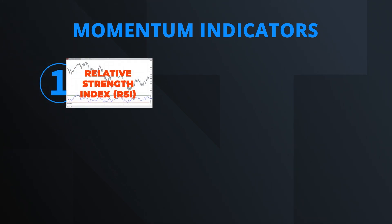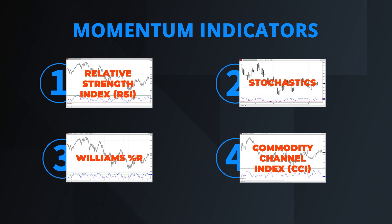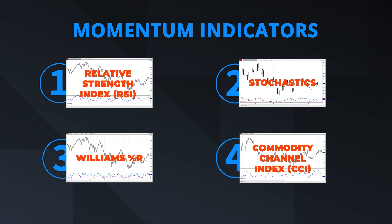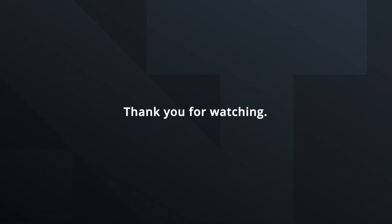Incorporating momentum indicators in your trading regimen is a smart way to understand the strength and direction of the current trend of a market. While you don't need all these momentum indicators on the same chart, finding the right combination that works for you requires experimentation and observation. Once you have the right indicator or indicators selected, you can complement them with other types of indicators — like trend, volume, or volatility indicators. Please check out the syllabus for videos explaining these valuable concepts. Thanks for watching.